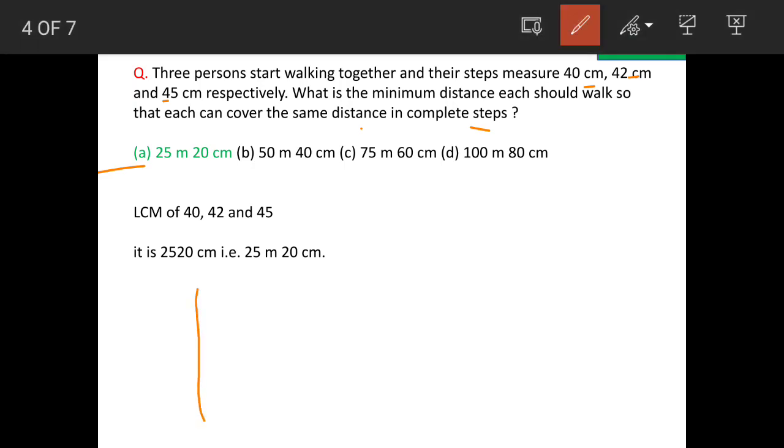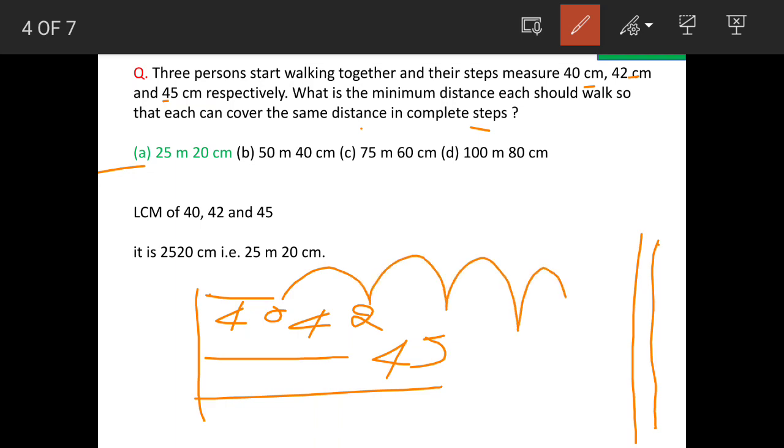Let's say this is a start point and there is a person whose step is 40 centimeters, the other person's step is 42 centimeters, and the third person's step is 45 centimeters. What distance should they travel so that they all stand on the same point in complete steps? Complete steps means it should not be one and a half step or one fourth step etcetera.